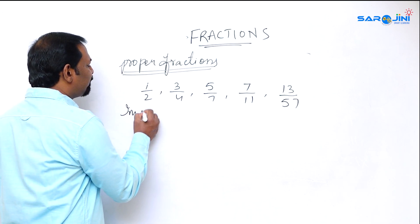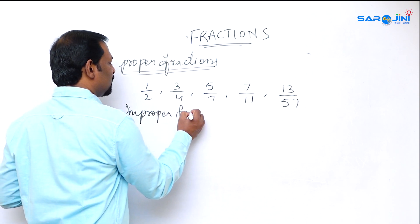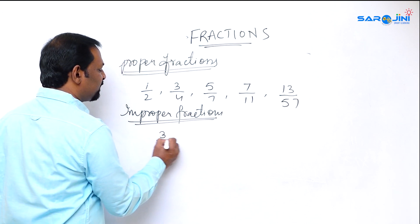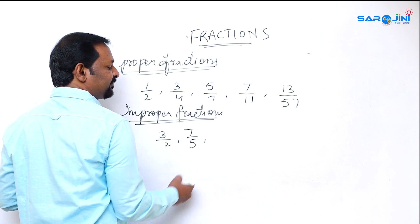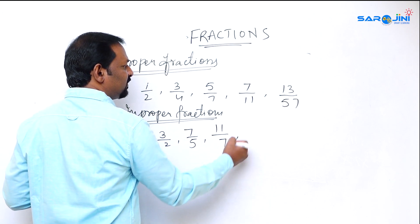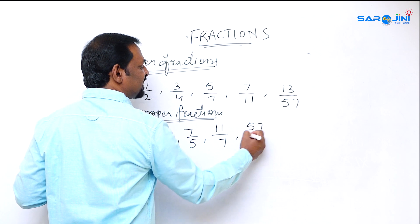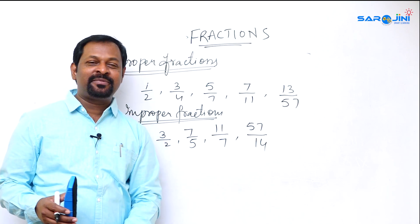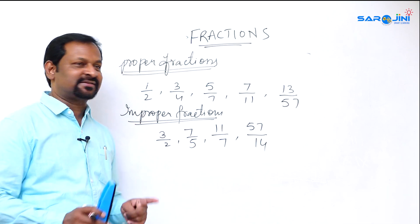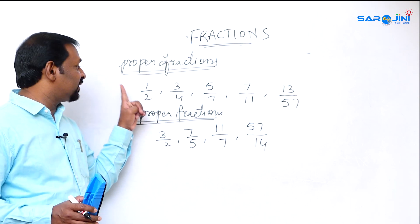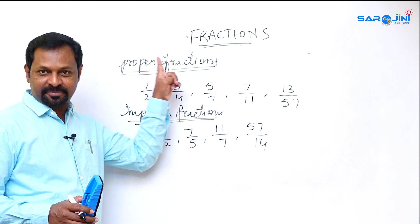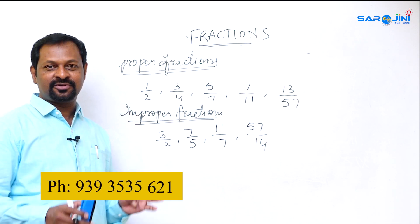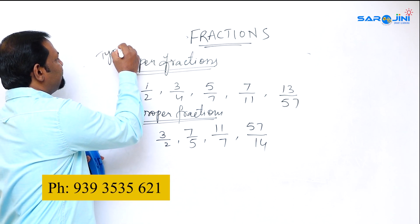Improper fractions are fractions like three by two, seven by five, eleven by seven, or fifty-seven by fourteen. Here the numerators are greater than the denominators. So the difference is: denominator greater than numerator is a proper fraction; numerator greater than denominator is an improper fraction.